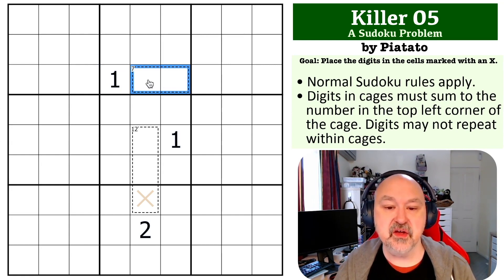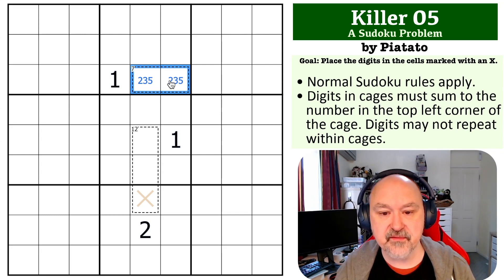So you can't use 1, 6 in this 7 cage. So it can only be made up of 2, 5, or 3, 4. They're the only ways you can make it up. But this 2 means that this cannot be a 2. So if this can't be a 2, this can't be a 5. So you end up with these are the possibilities of the 7 cage.